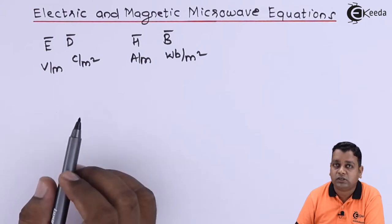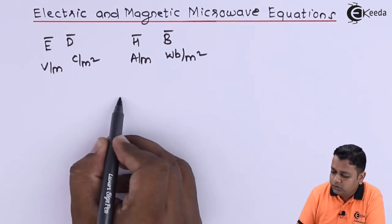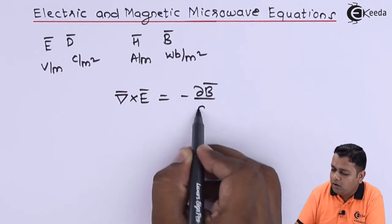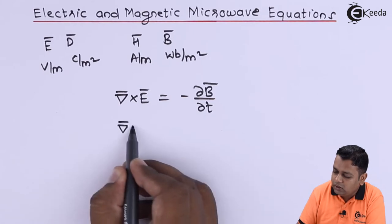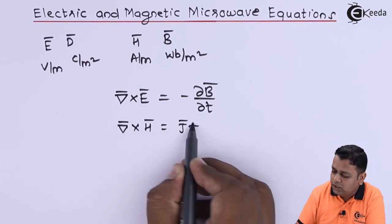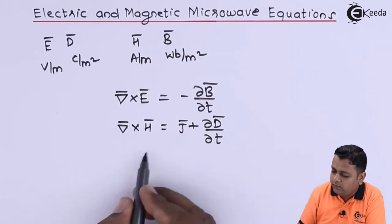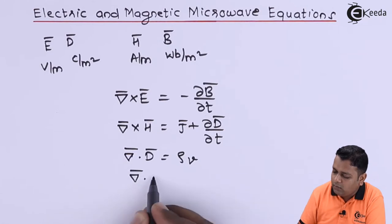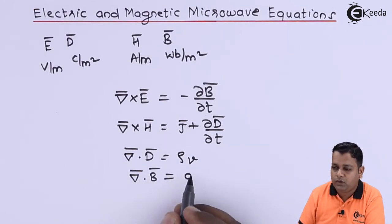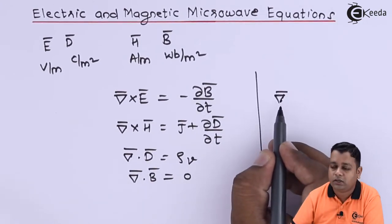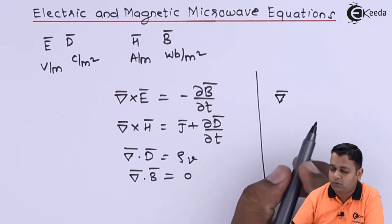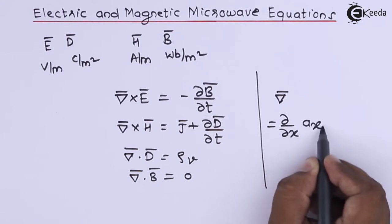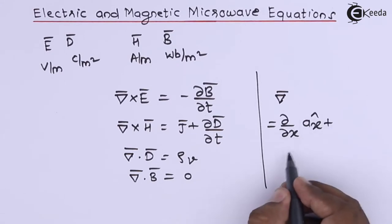The relationship between E, D, H, and B is summarized by Maxwell's equations in the time domain. First: del-cross E-bar equals minus del B-bar by del-t. Second: del-cross H-bar equals J-bar plus del D-bar by del-t. Third: del-dot D-bar equals rho-v. Fourth: del-dot B-bar equals zero. The del operator in rectangular coordinates is the partial derivatives with respect to x, y, and z along unit vectors.